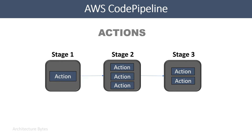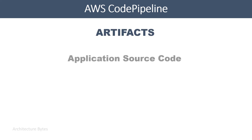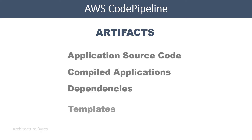Every action has an action category and an action provider. Here is a list of action categories and providers. Every action category has available providers to choose from. For example, for action category Source, you could choose amongst providers AWS CodeCommit or GitHub. For Build, you could use AWS CodeBuild or Jenkins, and so on. Whenever you add an action to a stage, you must choose an action category and the provider.